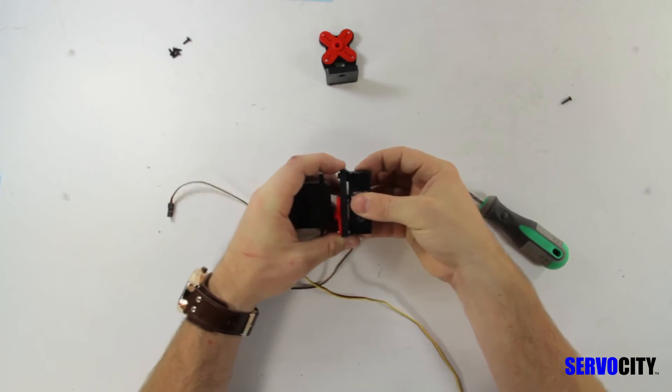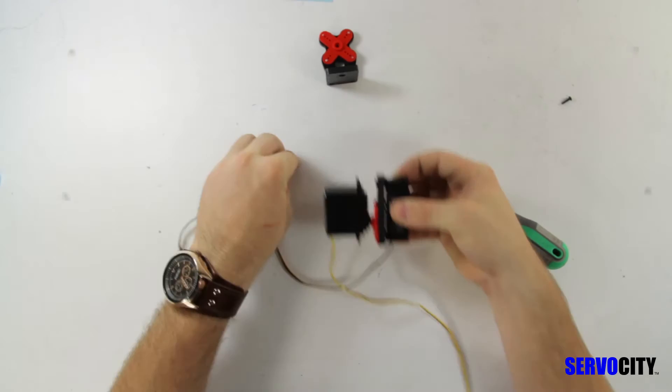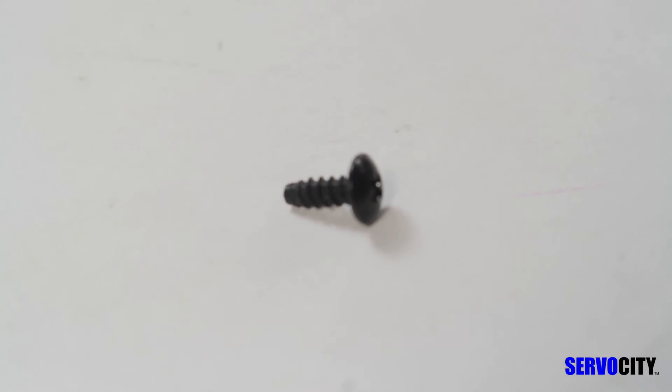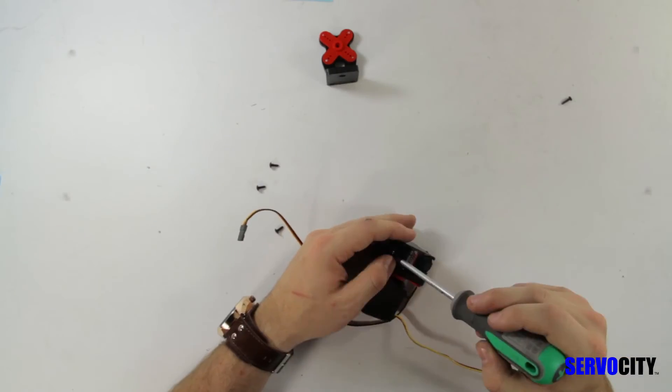Once you have that in place you will attach your second servo to the top using the four 3⁄8 inch black truss head screws.